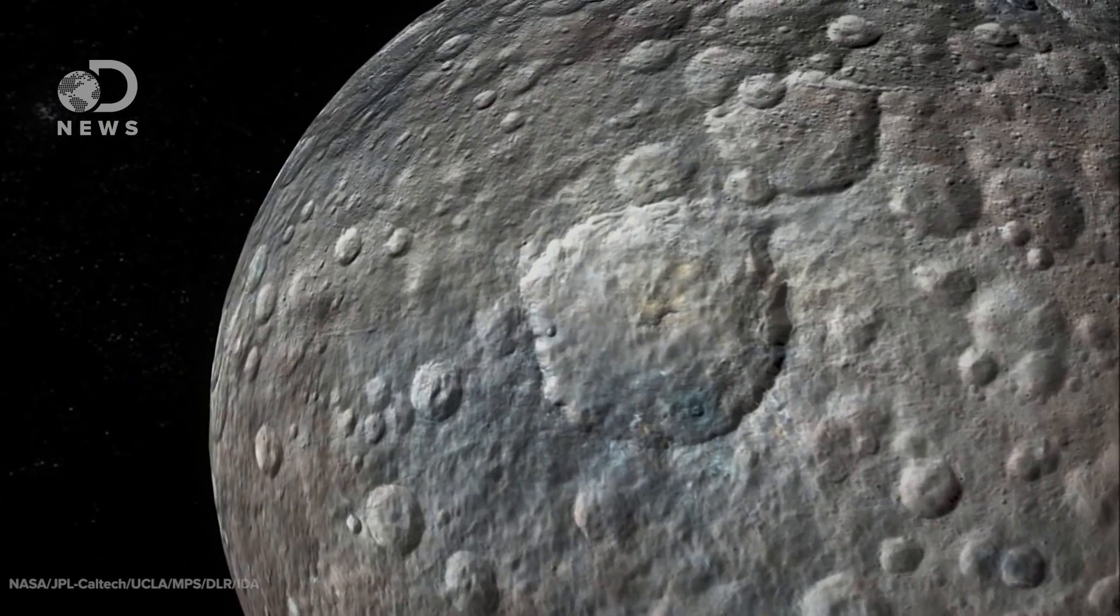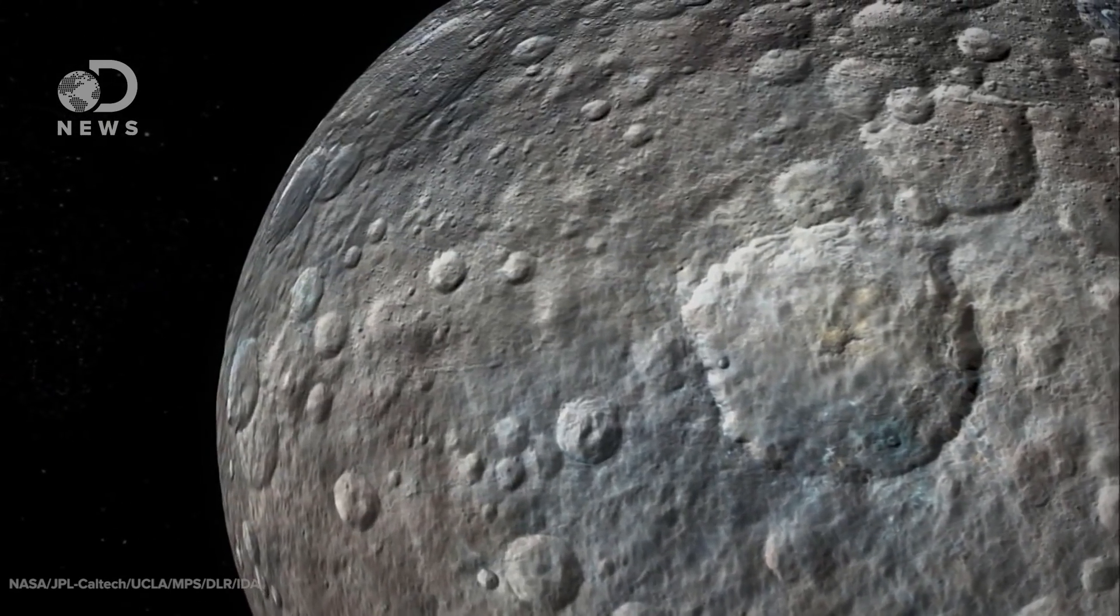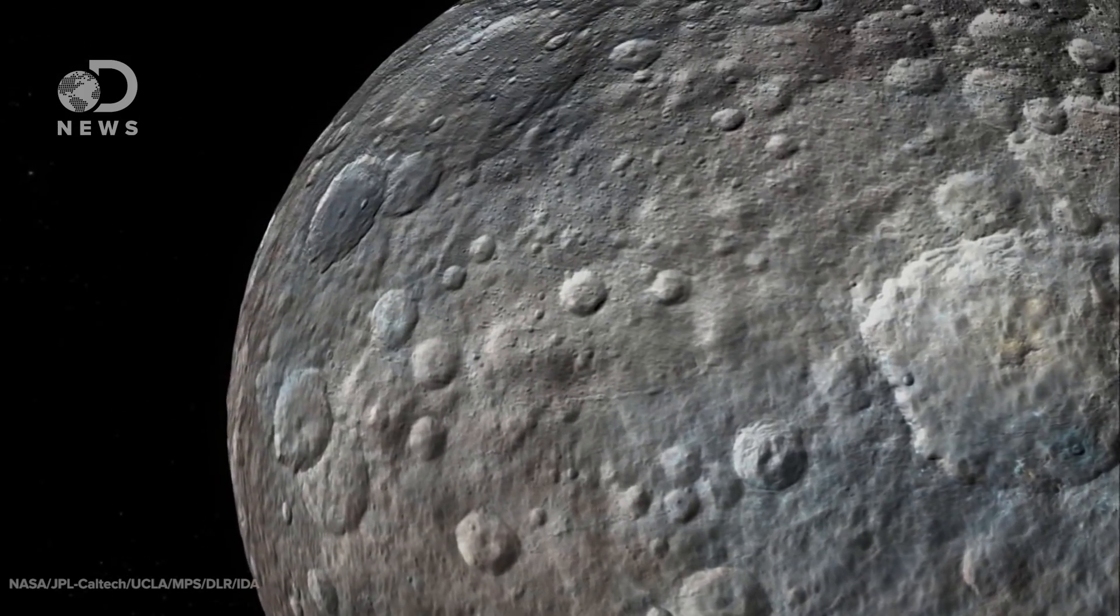This discovery adds yet another piece of evidence that organics do exist throughout our solar system, and it could help us learn more about the evolution and distribution of organic species. Plus, at four and a half billion years old, Ceres has been around since nearly the beginning of our solar system. If these organic compounds were also around that early, that may have provided a lot more time for life to form outside of our own planet.